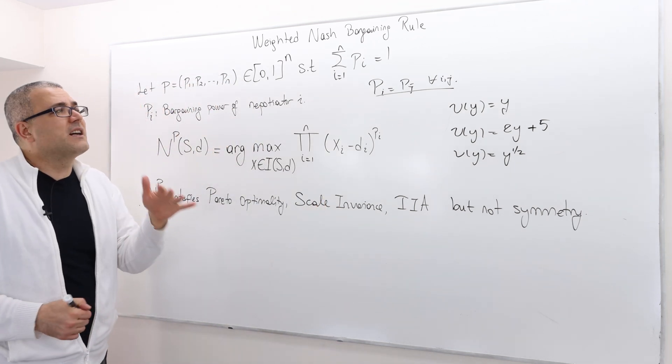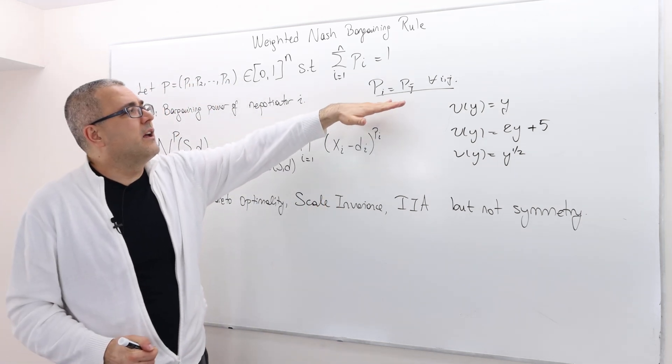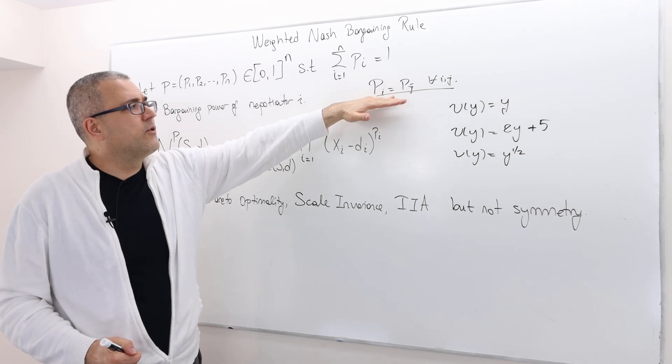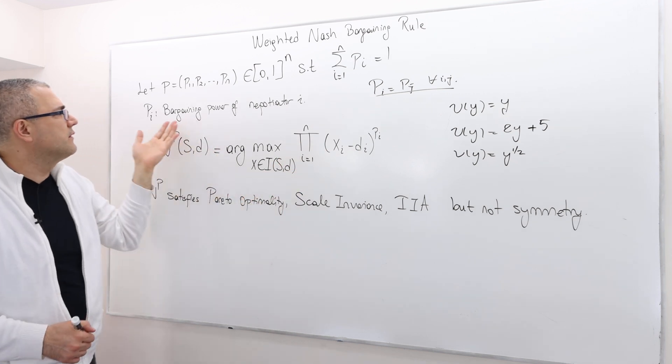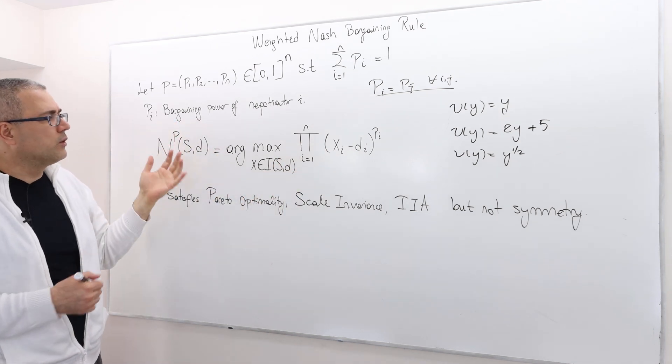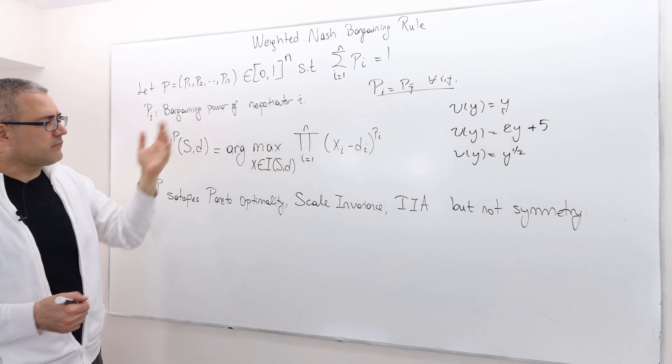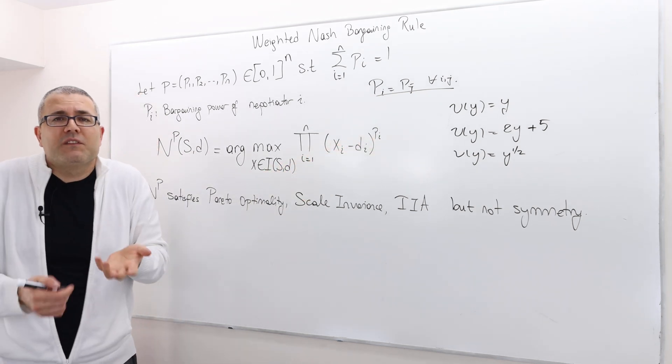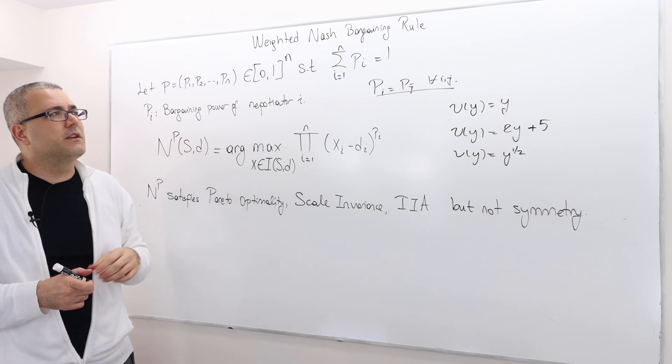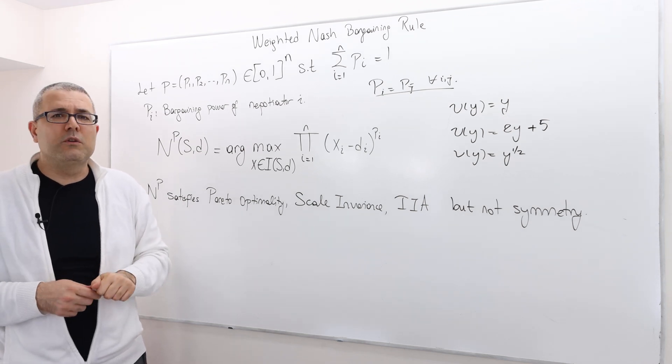But obviously, it's not symmetric. Okay. And the reason is, well, it's not symmetric as long as PI equals PJ doesn't hold. Okay. So that makes perfect sense because the symmetry of the rule is broken by introducing this concept of bargaining power. And that was the entire purpose of introducing this weighted Nash bargaining rule. Okay.